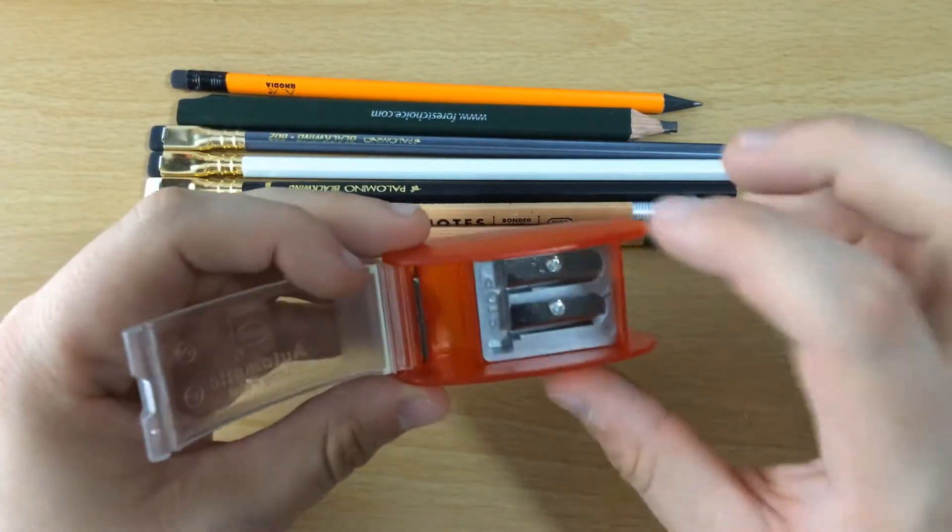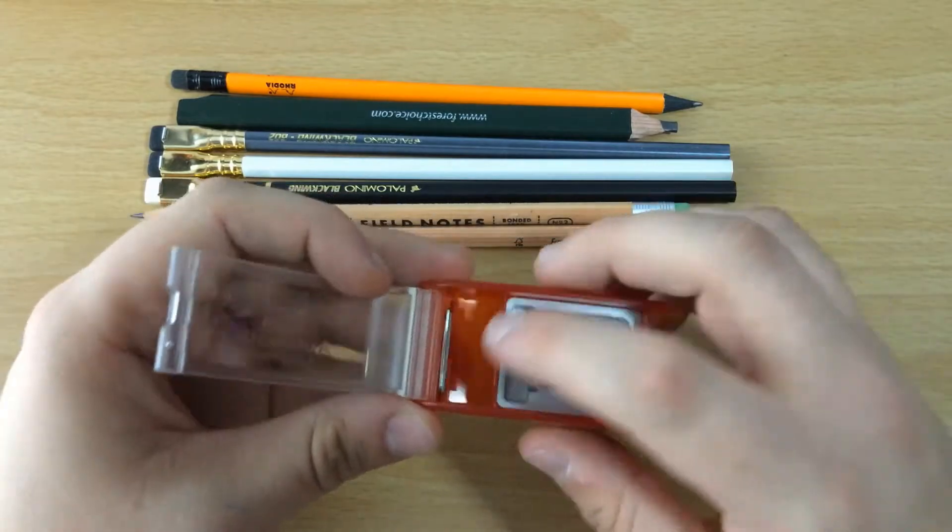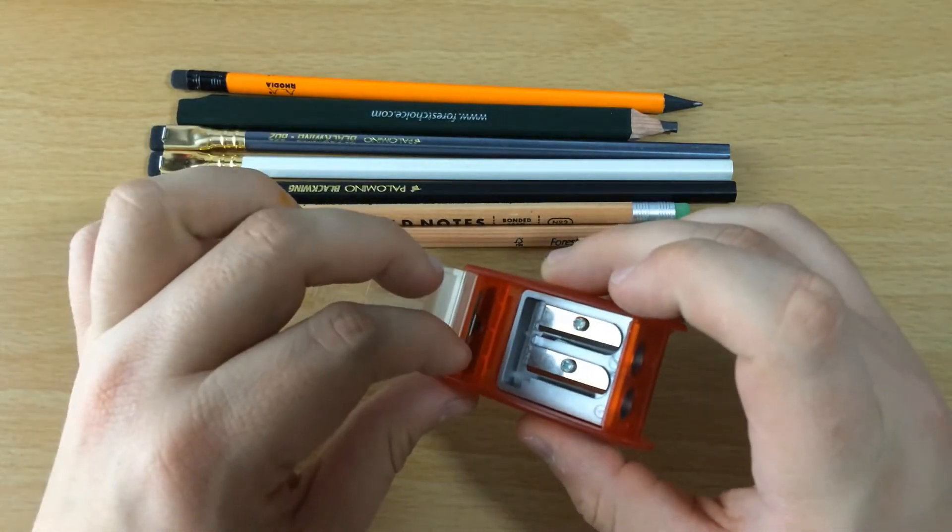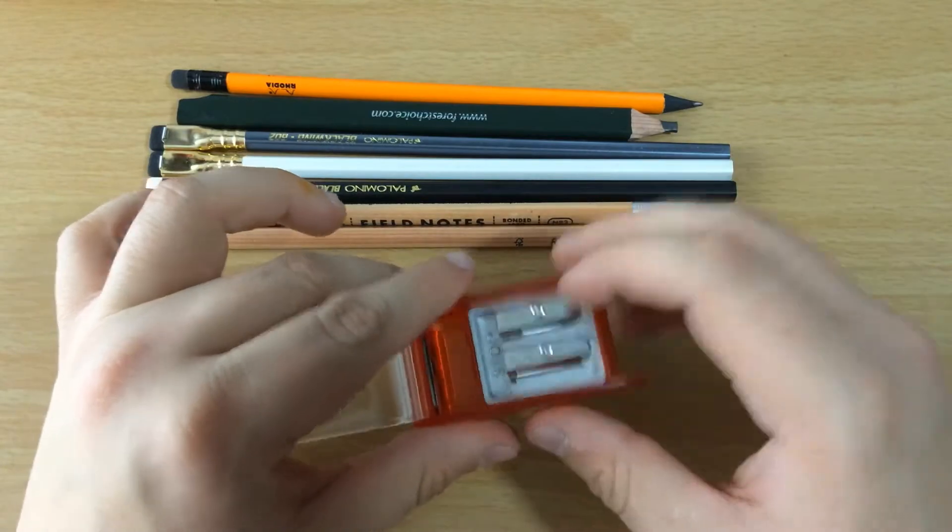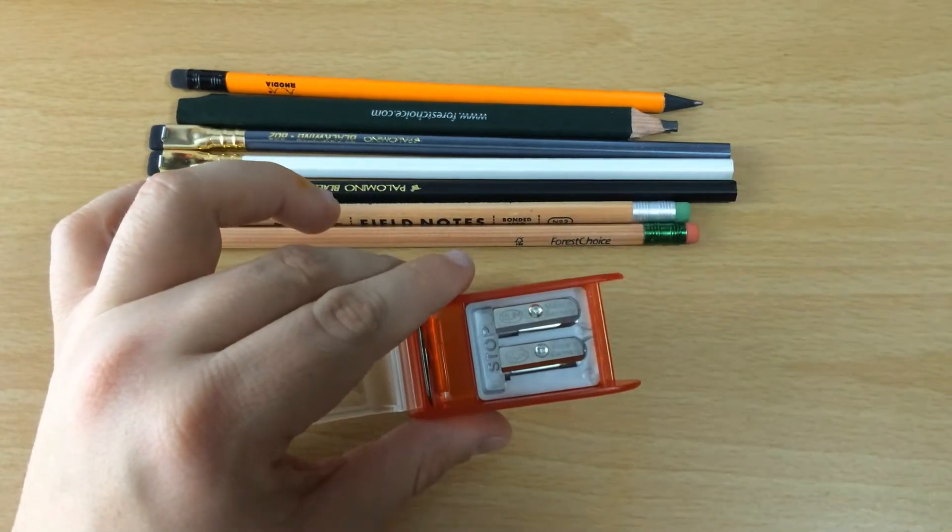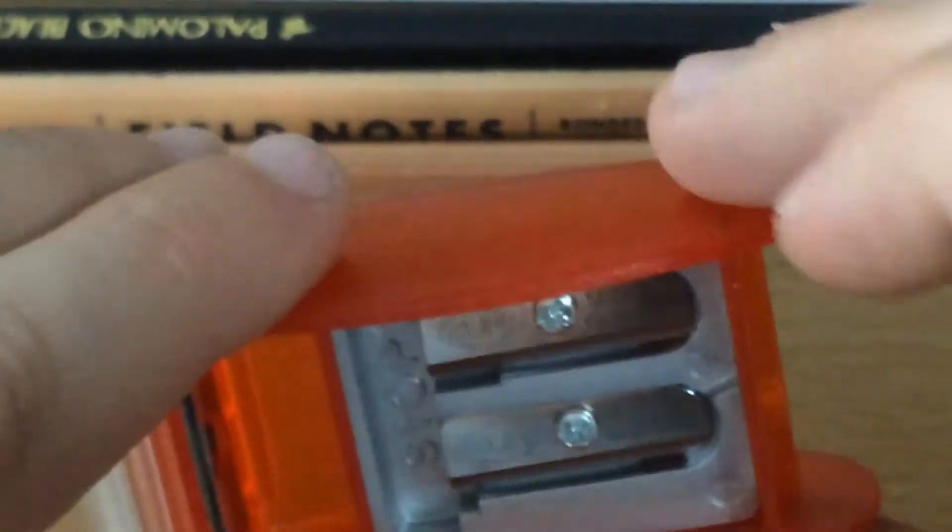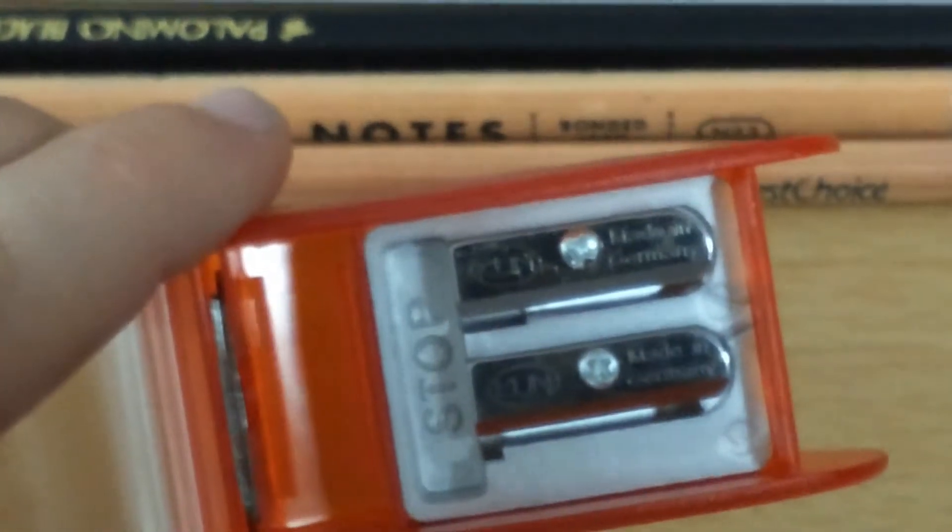When you open it up, you'll see there is the actual pencil sharpener here. But then right here, there are actually two separate, two extra blades. So if these ever do get dull, you can just unscrew them easy enough. It is just a simple Phillips head screw right there.